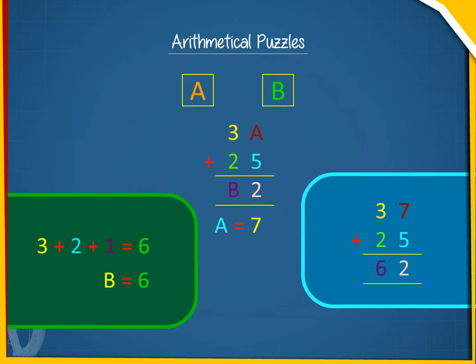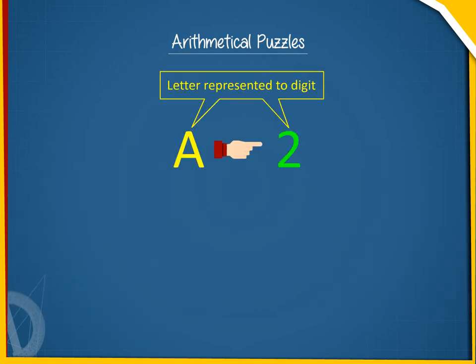In the solution of such a puzzle, we follow these two rules. One: Each letter in the puzzle must stand for just one digit. Each digit must be represented by just one letter.